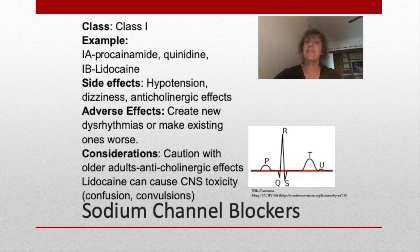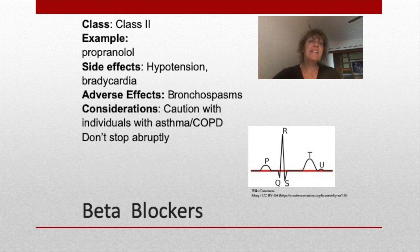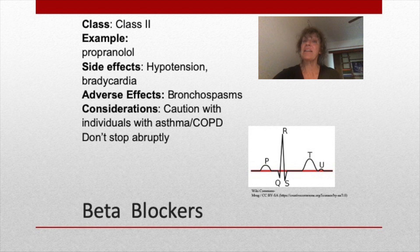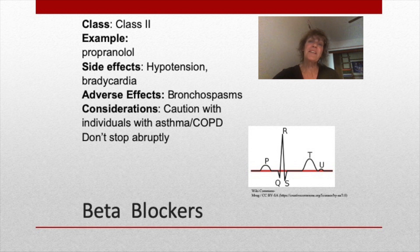Lidocaine can cause CNS toxicity; signs include confusion and convulsions. Class 2 medications are beta adrenergic antagonists, or beta blockers. These drugs affect the autonomic nervous system, blocking the effects of adrenaline, which slows the heart rate and slows conduction through the AV node. Propranolol is an example; generic beta blockers share the common drug ending '-olol.' Bradycardia and hypotension are common side effects. These drugs can cause bronchospasm affecting beta-2 receptors in the airway, so they are used with caution in individuals with asthma or COPD. Beta blockers should never be stopped abruptly, as this can cause rebound hypertension and increased dysrhythmia.